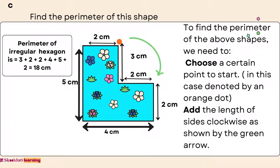Let us calculate the perimeter of a rectangle. A rectangular piece of land measures 25 meters long and 10 meters in width. Find the perimeter.